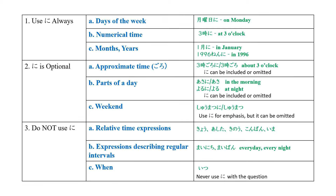To show which time words require the particle に and which don't, I've summarized the rules here. Rule number one: always use the particle に with these time-related words such as day of the week, numerical time, and months or years. Rule number two: the particle に is optional for these time-related words such as approximate time, parts of a day like morning or at night, and the word weekend. Rule number three: you never use the particle に with time-related words such as today, tomorrow, time words with intervals like every day or every morning, and the question word いつ. We'll go over each rule in more detail shortly.